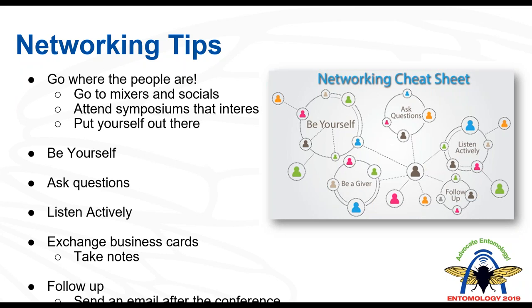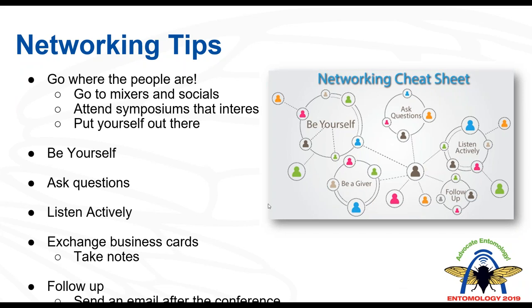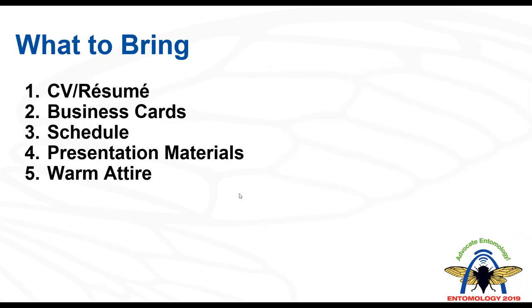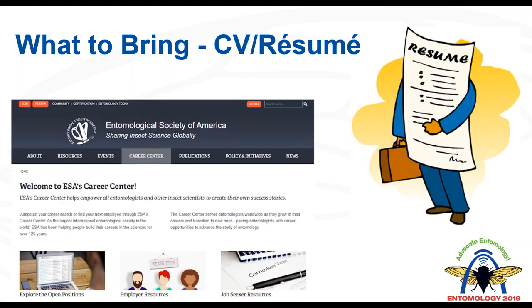In addition to your standard travel packing list, it is important to bring a few additional items for the 2019 annual meeting: a CV or resume, business cards, your schedule, presentation materials, and professional business attire. Printed copies of your CV or resume can be handed out during mixers and posted to the career bulletin board — a place where students looking for graduate research positions, jobs, or postdocs can pin their resume for future employment. Your school's career center can help you build a resume, and ESA also has webinars about building your resume on the ESA website.